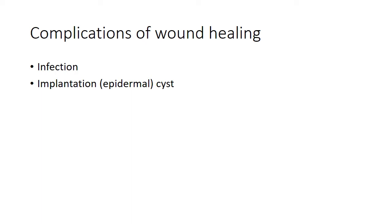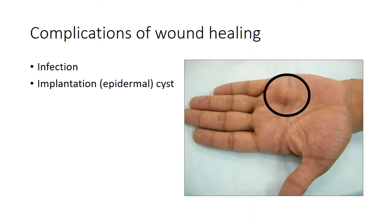Now coming to complications of wound healing. The most common complication is infection — the wound may get infected with bacteria, and this usually delays the healing process. There can also be implantation infection or epidermal cyst formation. This occurs when there is persistence of epithelial cells in the wound after healing, and these persistent epithelial cells can sometimes give rise to epidermoid cysts.